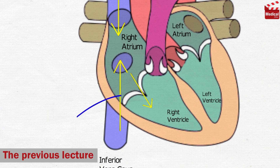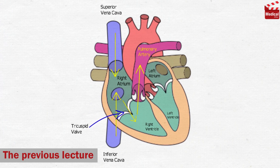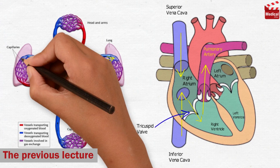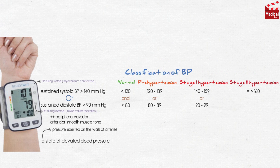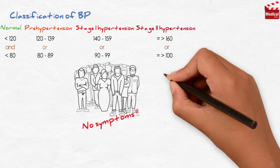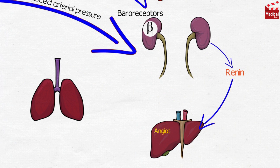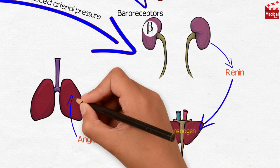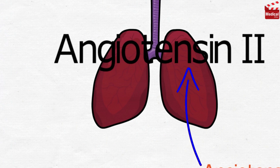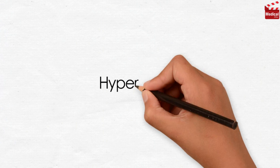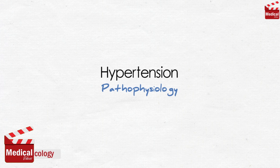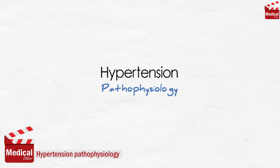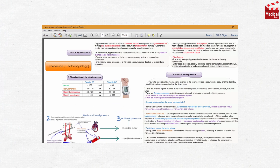After discussing an introduction to the cardiovascular system in the previous lecture, today we'll start discussing hypertension in simple and entertaining illustrations as usual. In this video we'll discuss the essential pathophysiology of hypertension, so we could have fun discussing the categories of the drugs used for it in the upcoming lectures.